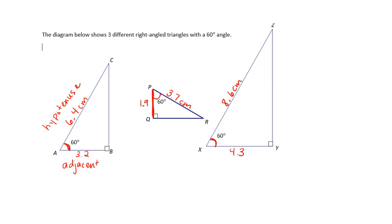If I have the angle and the side across from it — see how it's across from that angle, not touching the angle at all — that's called the opposite side. Now we're going to measure all the opposite sides. I got 5.6 centimeters for the first one, 3.2 centimeters for the second, and 7.5 centimeters for the third.